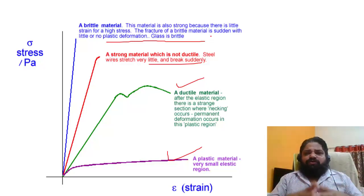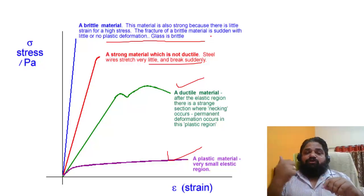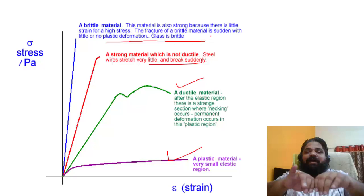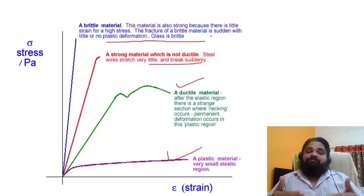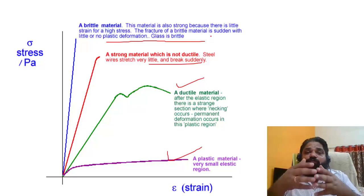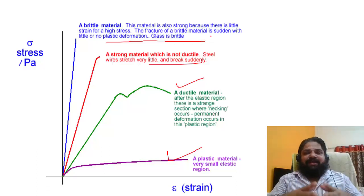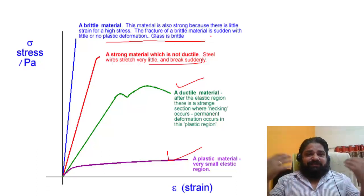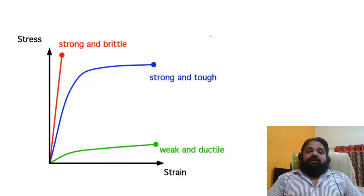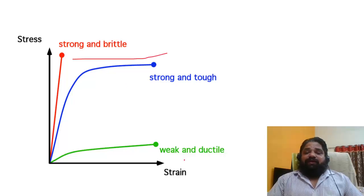These are basic concepts. When we were children we used to break broomsticks by bending, not stretching — it comes by common sense from observing others. Engineering is moreover common sense, and we apply this common sense to these kinds of problems. Strong and brittle, strong and tough, weak and ductile — these are different cases from which you can compare material behaviors.